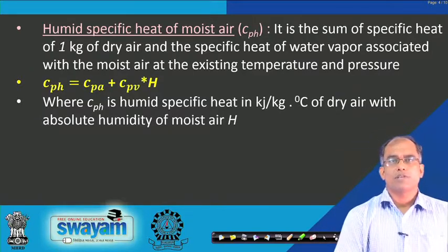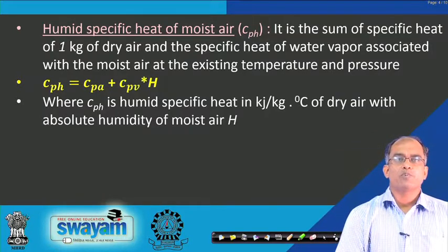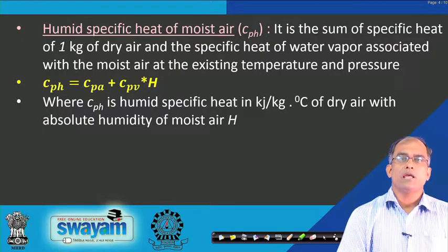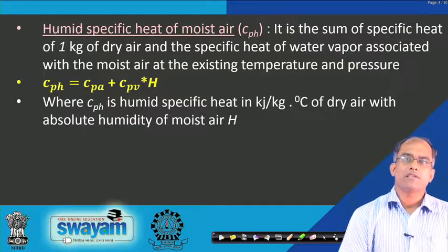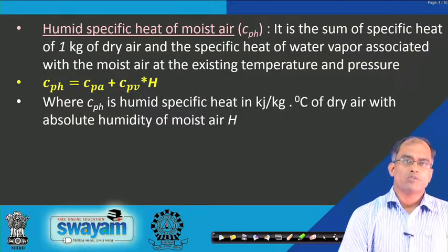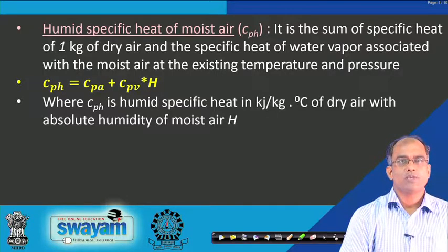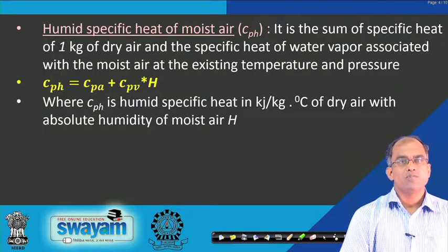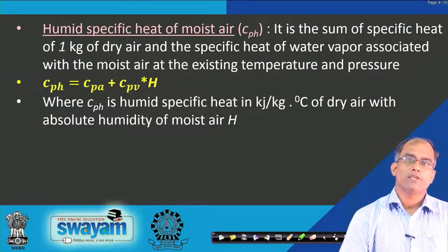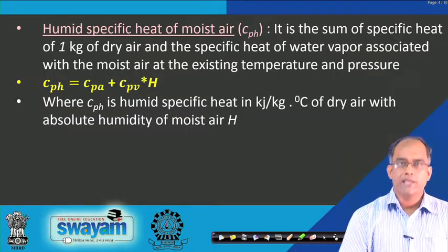Humid specific heat C_pH is the sum of the specific heat of 1 kg of dry air and the specific heat of the associated water vapour at the existing temperature and pressure: C_pH = C_pA + C_pV·H, in kJ/kg·°C, where H is the absolute humidity of the moist air.